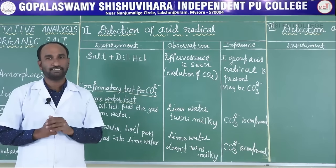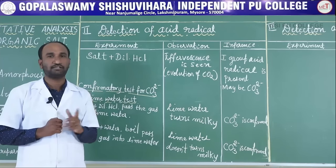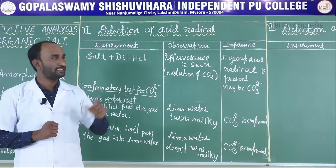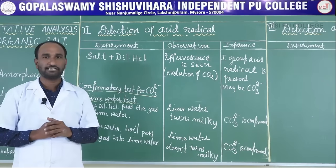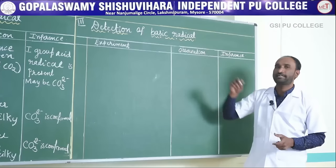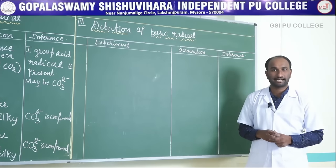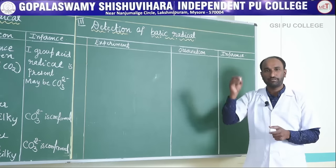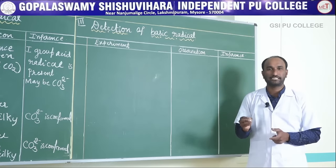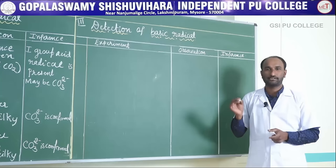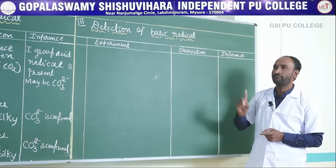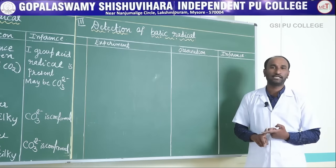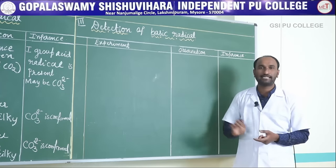The detected acid radical corresponds to a basic radical. In detection of the basic radical, there are many groups: zero, first, second, third, fourth, fifth, and sixth group. The one cation present in the salt can be identified systematically by going through each group.